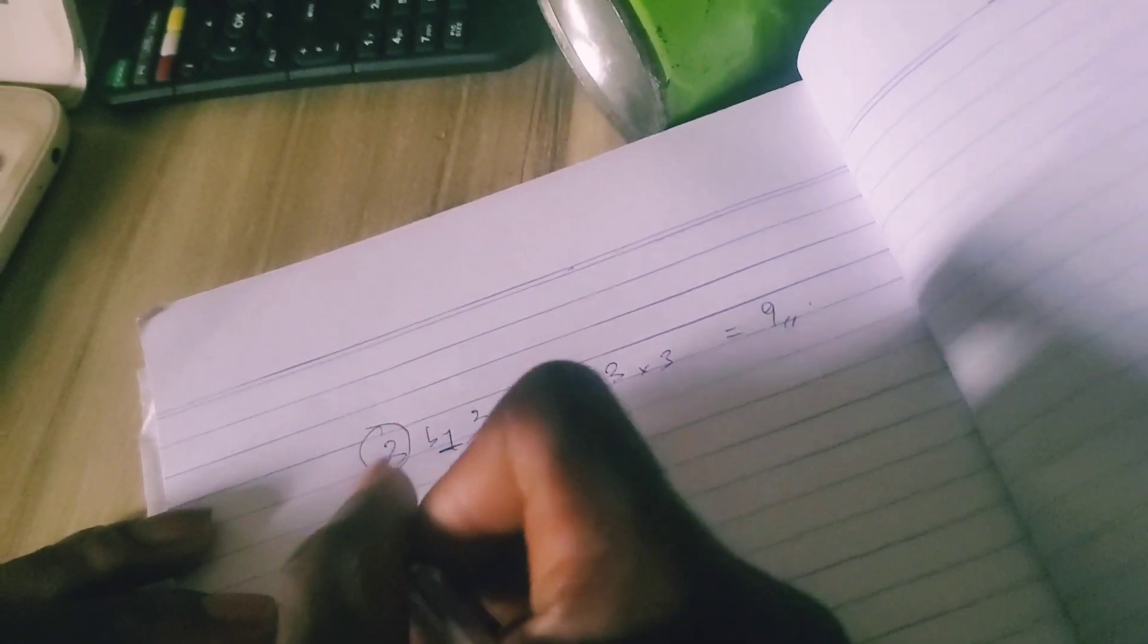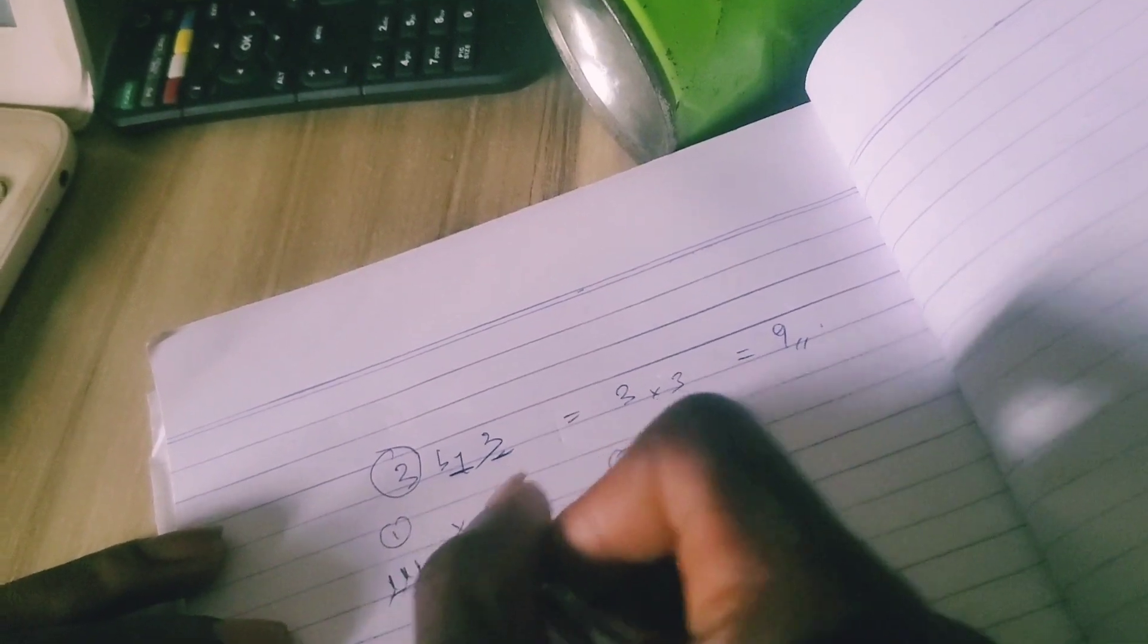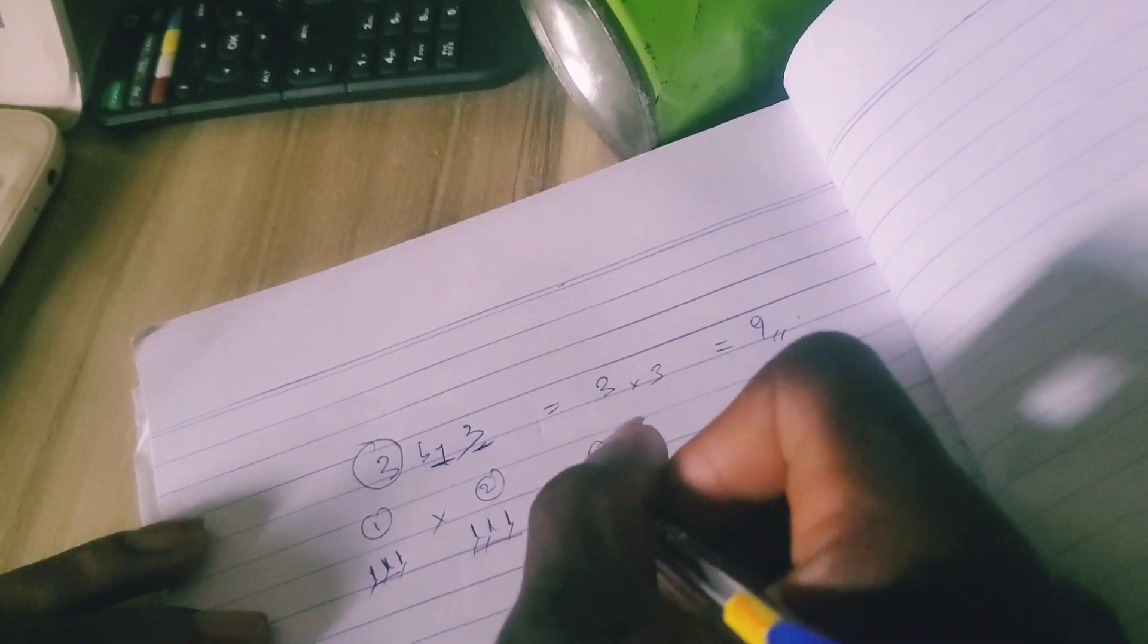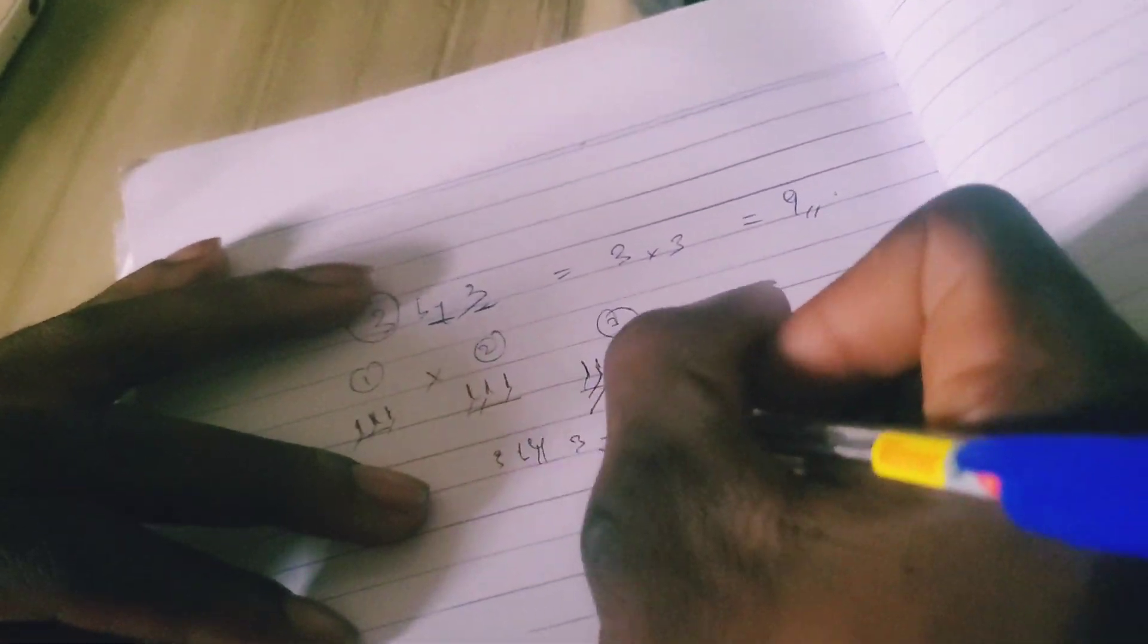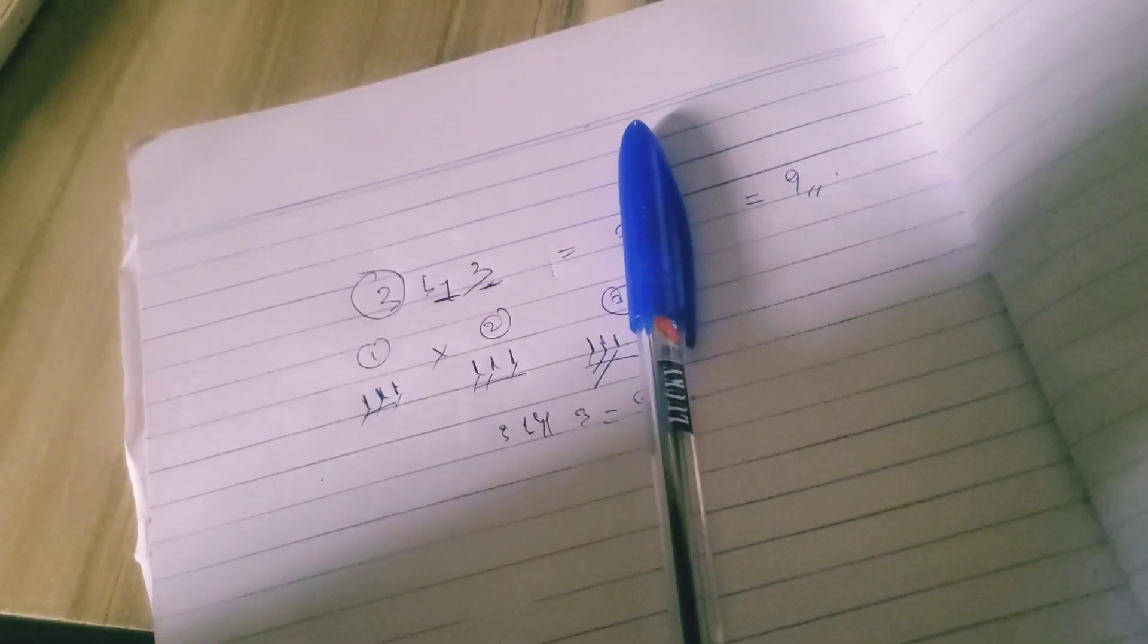So we're gonna say one, two, three, four, five, six, seven, eight, and nine. So which means three by three, anywhere you see three by three, just try to understand that the answer is equal to nine.